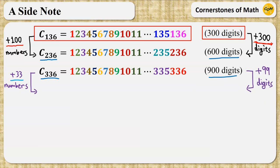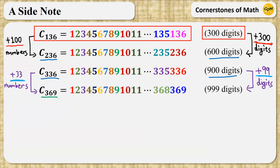Interestingly, adding 33 numbers will add 99 digits. So, C369 is a 999-digit number.